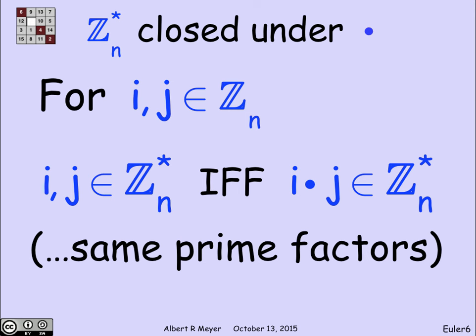So there are lots of different ways to verify this straightforward fact that ZN* is closed under multiplication. It's worth a quick remark that ZN* is not closed under addition, because you can always take an element in ZN* and its additive inverse — both of which are in ZN* — add them, and you get 0, which is by no means in ZN*.